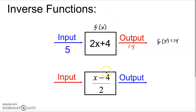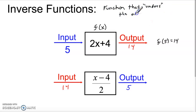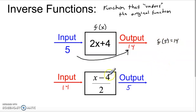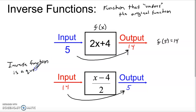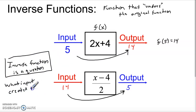If we plug in 14 — that is, the output of the original function — as the input for this one: 14 minus 4 is 10 in the numerator, and 10 over 2 is 5. You see the output is 5, exactly the opposite of what happened before. An inverse function undoes the original function. So the mapping here is that 5 goes to 14, and this inverse function takes 14 and sends it back to 5. In other words, an inverse function asks the question: what input created this output?